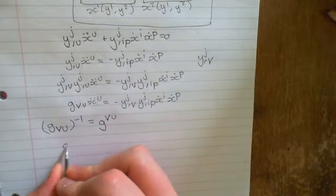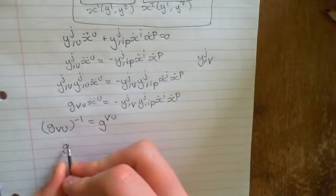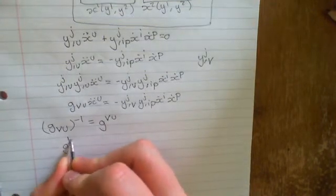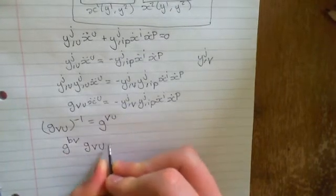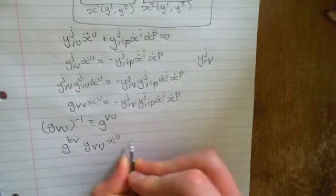So what we're going to do is we're going to contract this with an arbitrary index, x b we'll use temporarily, v, g^bv g_vu x double dot u.